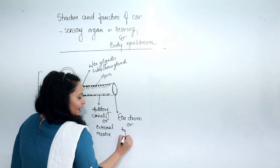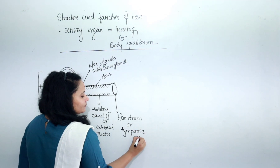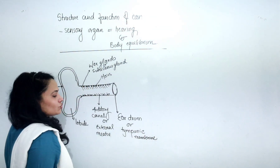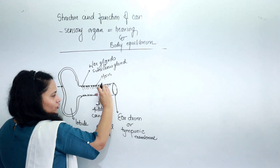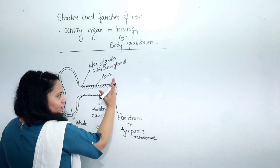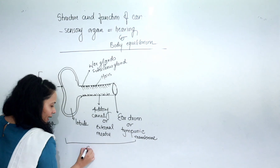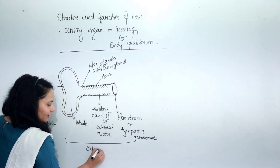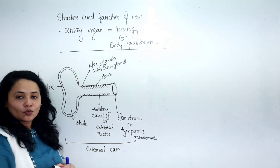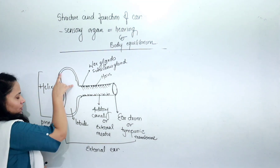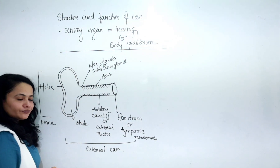The eardrum is also called the tympanic membrane. When sound waves enter inside and travel through the auditory canal, this eardrum vibrates. So this much constitutes the external ear, which includes the pinna, the auditory canal, and the eardrum.